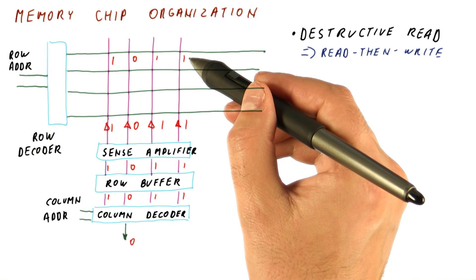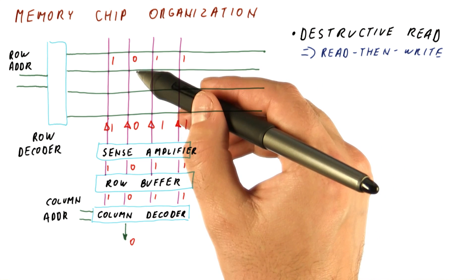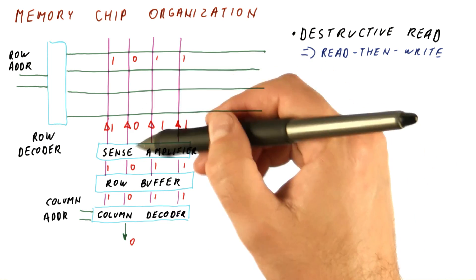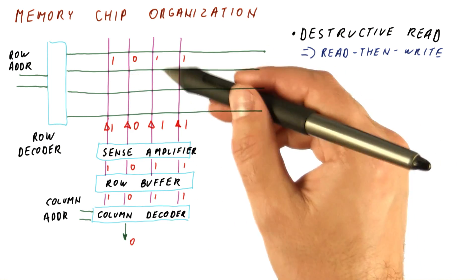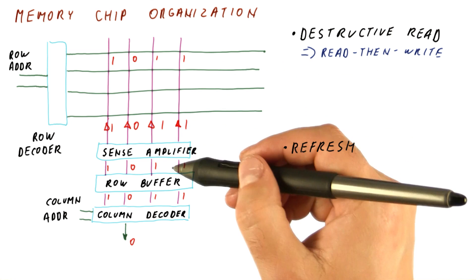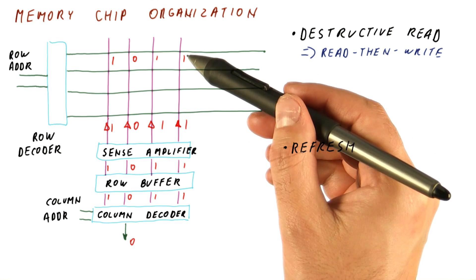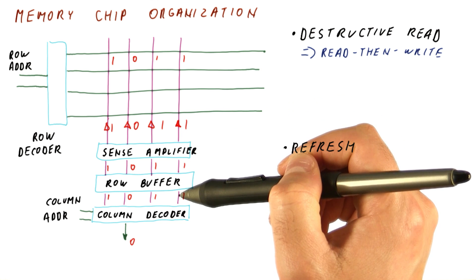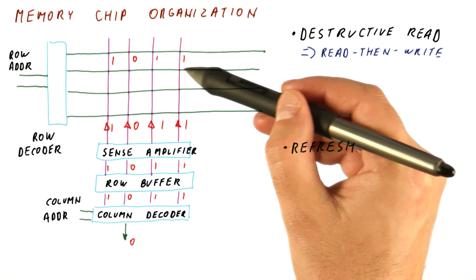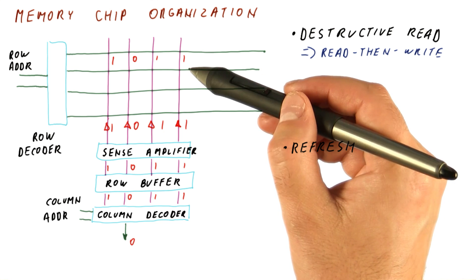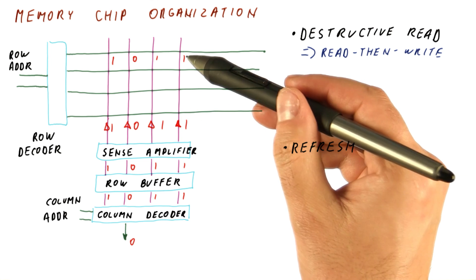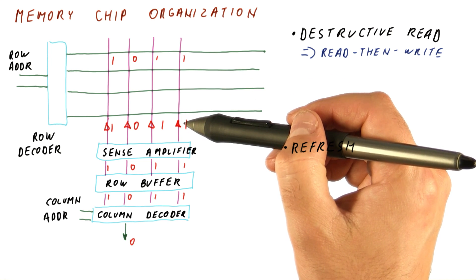Even if the cells have reduced to, say, 90% of what they should have, once we read them out and put the value back in, we restore the full value. So now they can again leak for a while before we need to read and then write them again. Refresh is really about making sure each row is read every once in a while. If the time for a cell to lose its value enough that we cannot recover it is some time t, then every row needs to be read and written within time t.